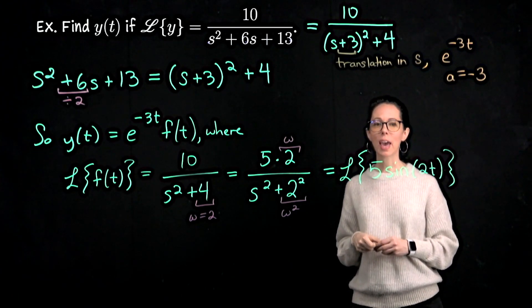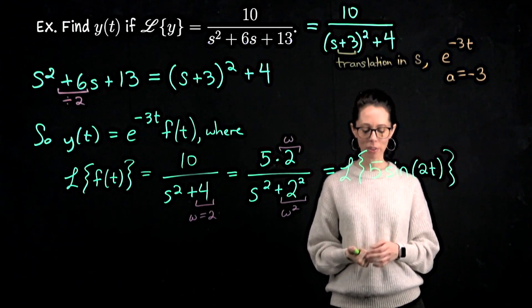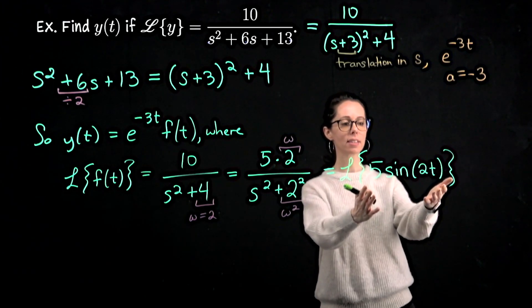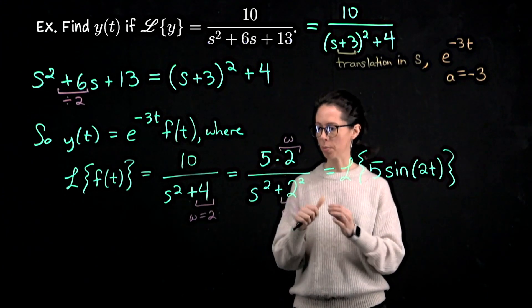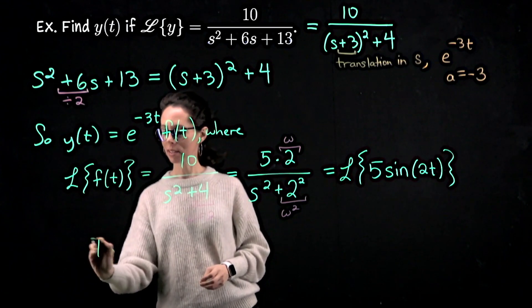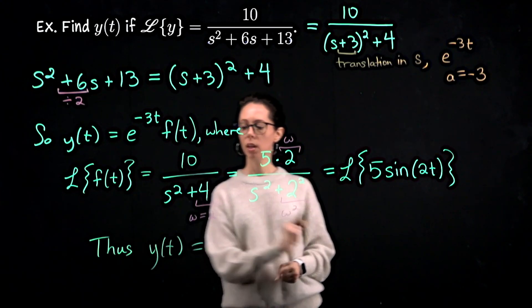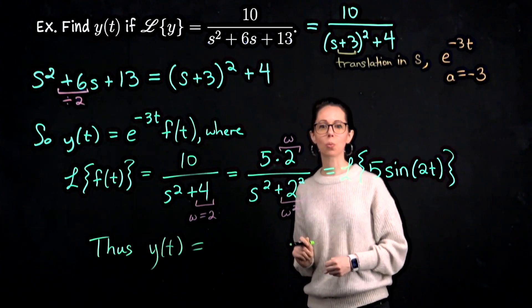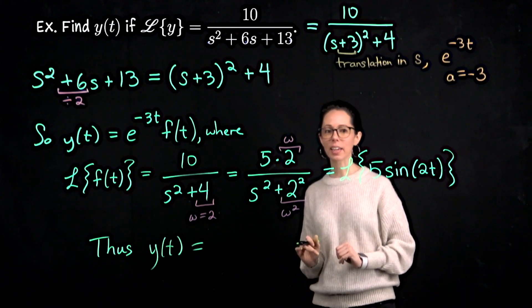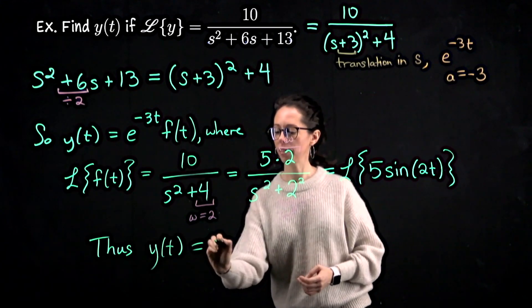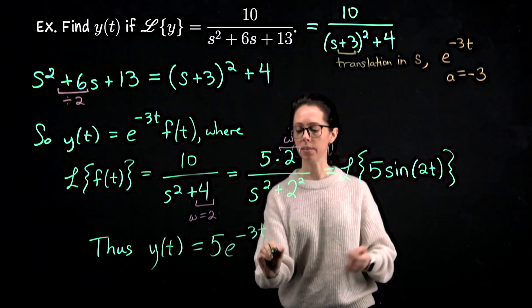Putting everything together, the function y we were trying to find is f of t scaled by the exponential e to the negative 3t. Thus we are done: our unknown function y, in the background solving some differential equation we didn't write down, looks like 5e to the negative 3t times sine of 2t.